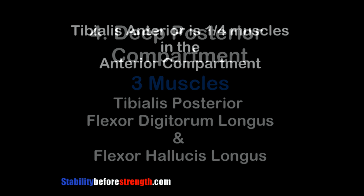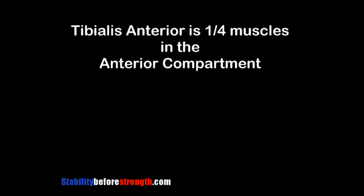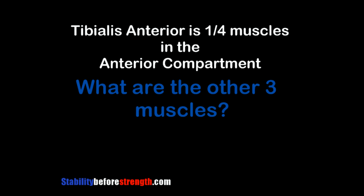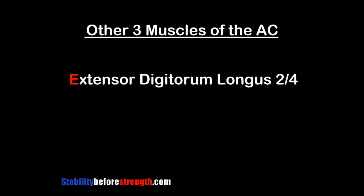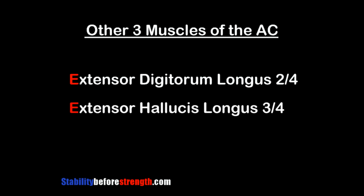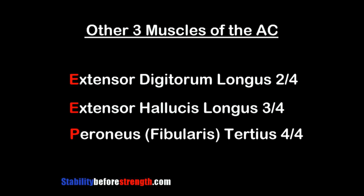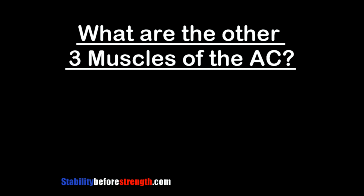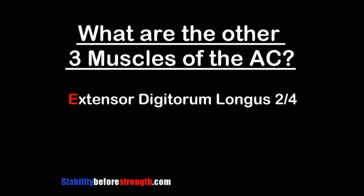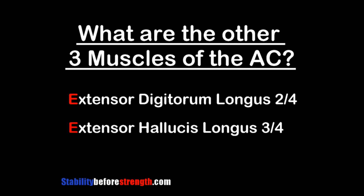The tibialis anterior is one of the four muscles located in the anterior compartment of the lower leg. The other three muscles of the anterior compartment include the extensor digitorum longus, the extensor hallucis longus, and the peroneus tertius.